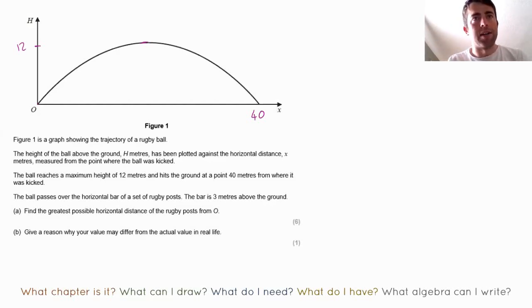The ball passes over the horizontal bar of a set of rugby posts. The bar is 3 meters above the ground. Now what can I draw doesn't just need to be a graph, it could be anything that gets it in my head. So a set of rugby posts like that, where the horizontal bar, the bar that goes horizontally there, is a height of 3 meters above the ground. So what is that in the context of this question? If the ball goes over the posts, then that horizontal bar must be underneath the trajectory.